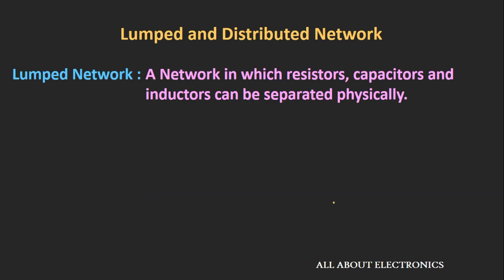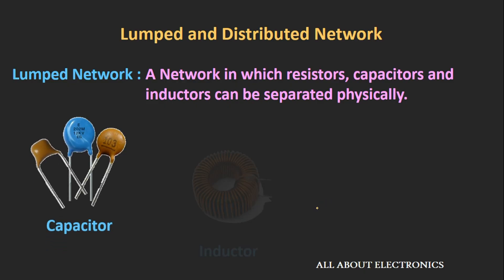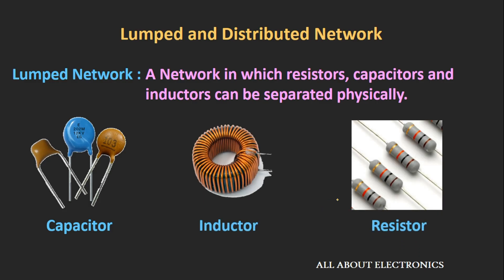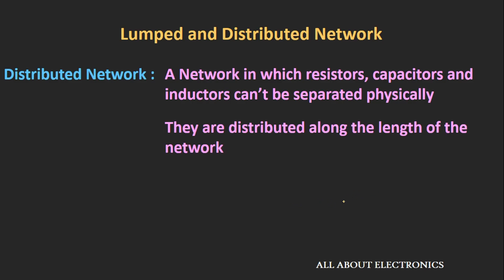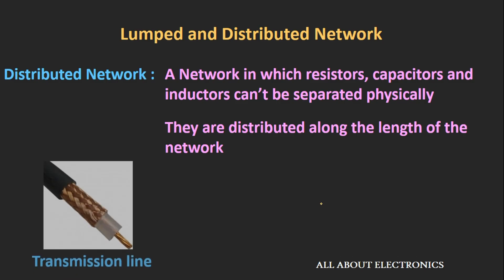The third kind is the lumped and the distributed network. In a lumped network, circuit elements like resistor, capacitor, and inductor can be separated physically — we can remove, measure, and replace them. In a distributed network, we cannot separate these elements as they act as a single entity distributed along the length of the network. An example of a distributed network is the transmission line or coaxial cable, where resistance, capacitance, and inductance are defined per unit length.